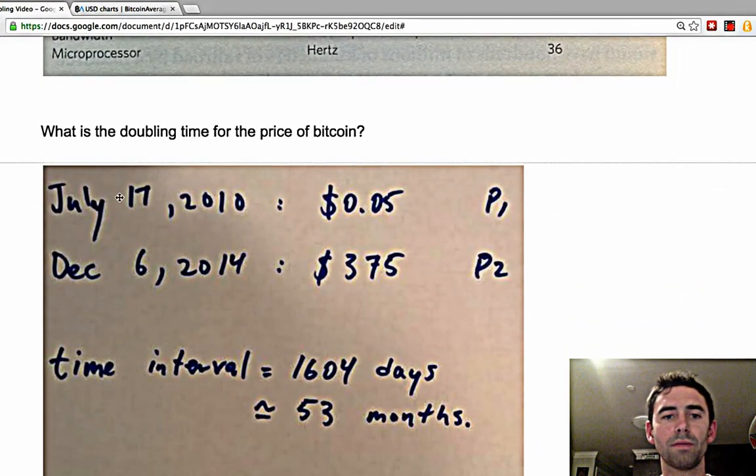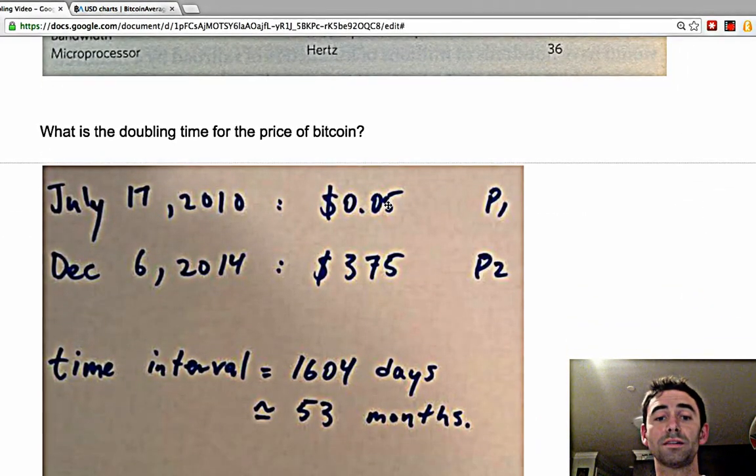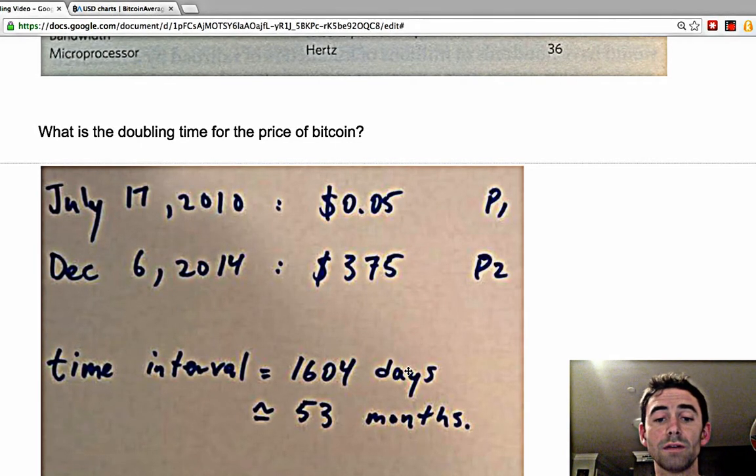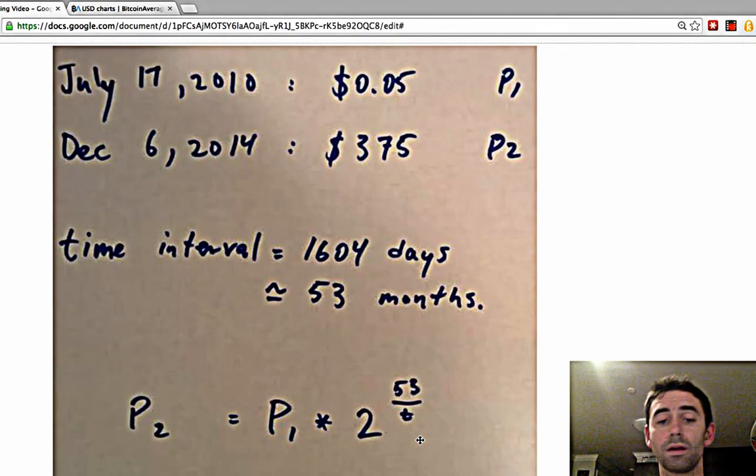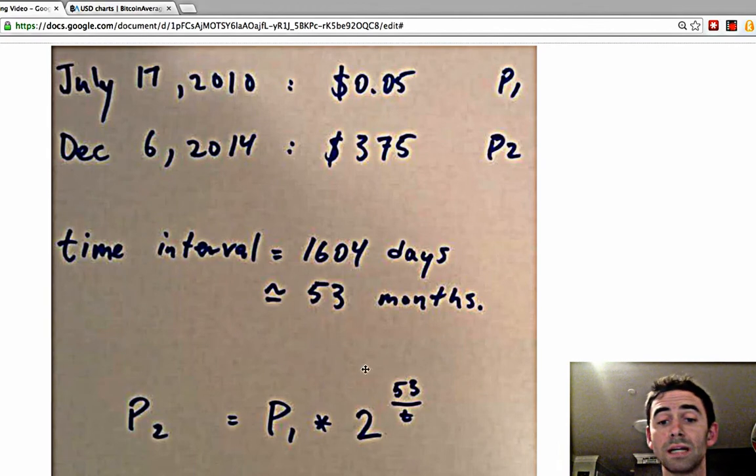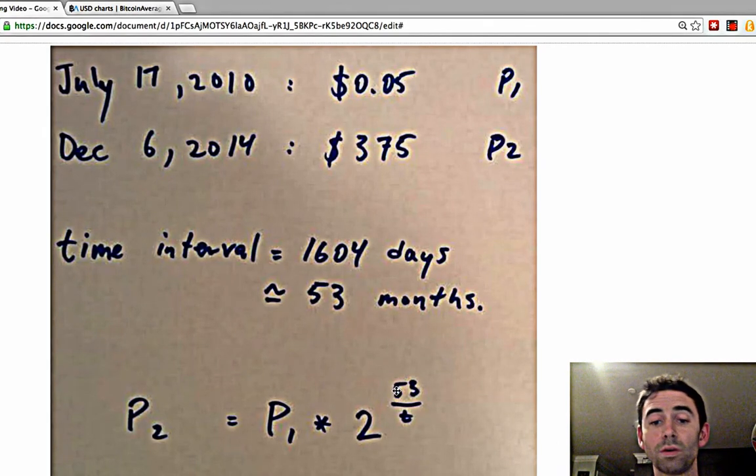The price when it started trading was 5 cents, today it's $375. So at the time interval of 53 months approximately, the formula for doubling is P2 equals P1 times 2 to the power of total time divided by doubling time.